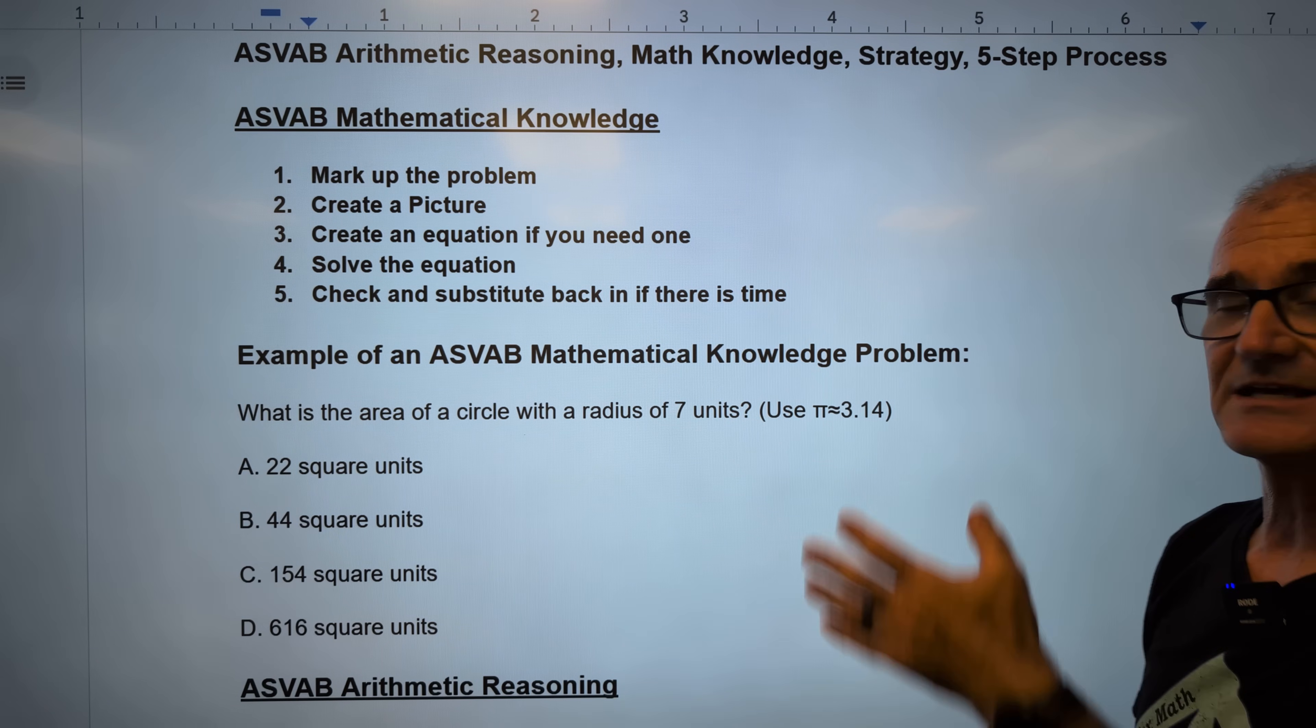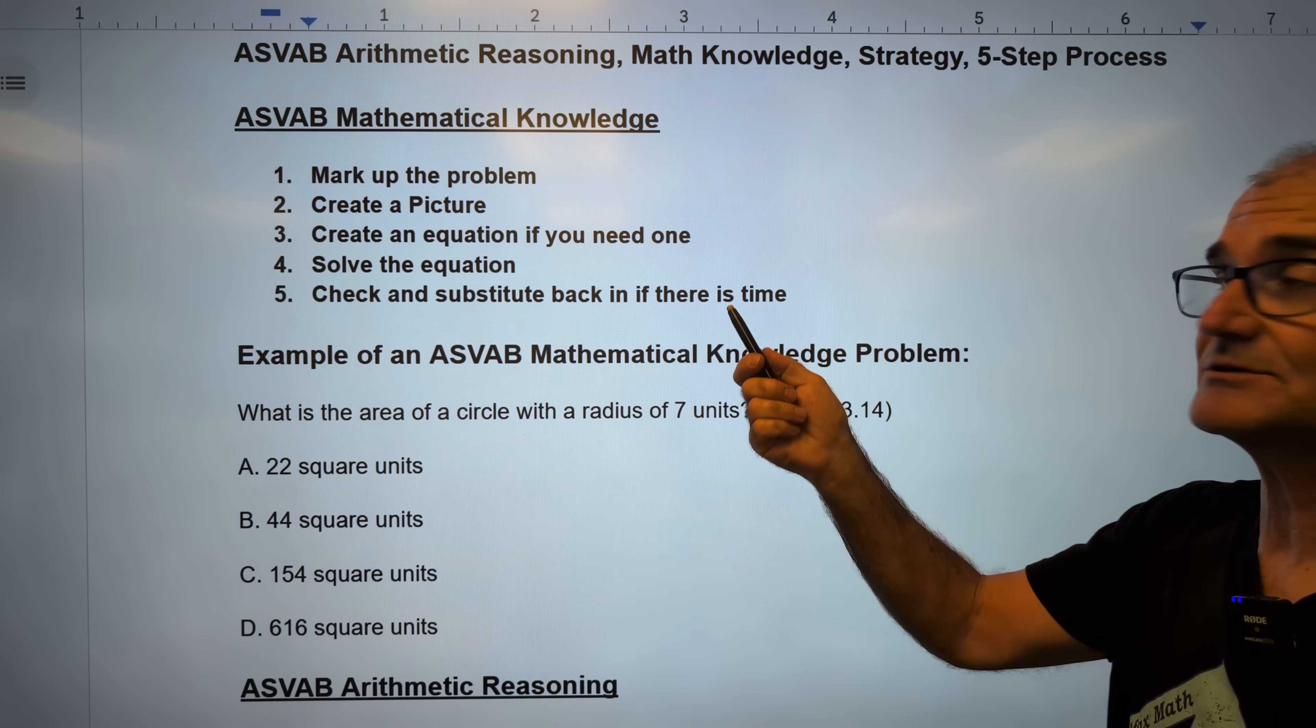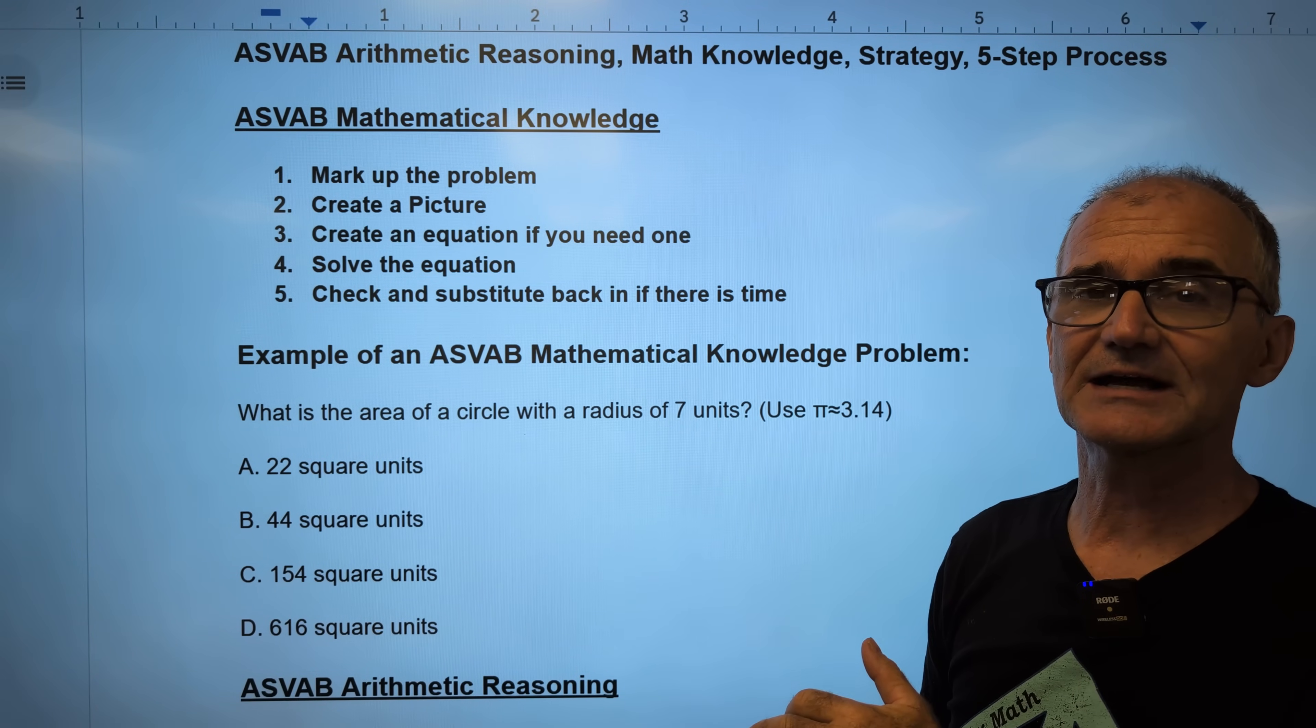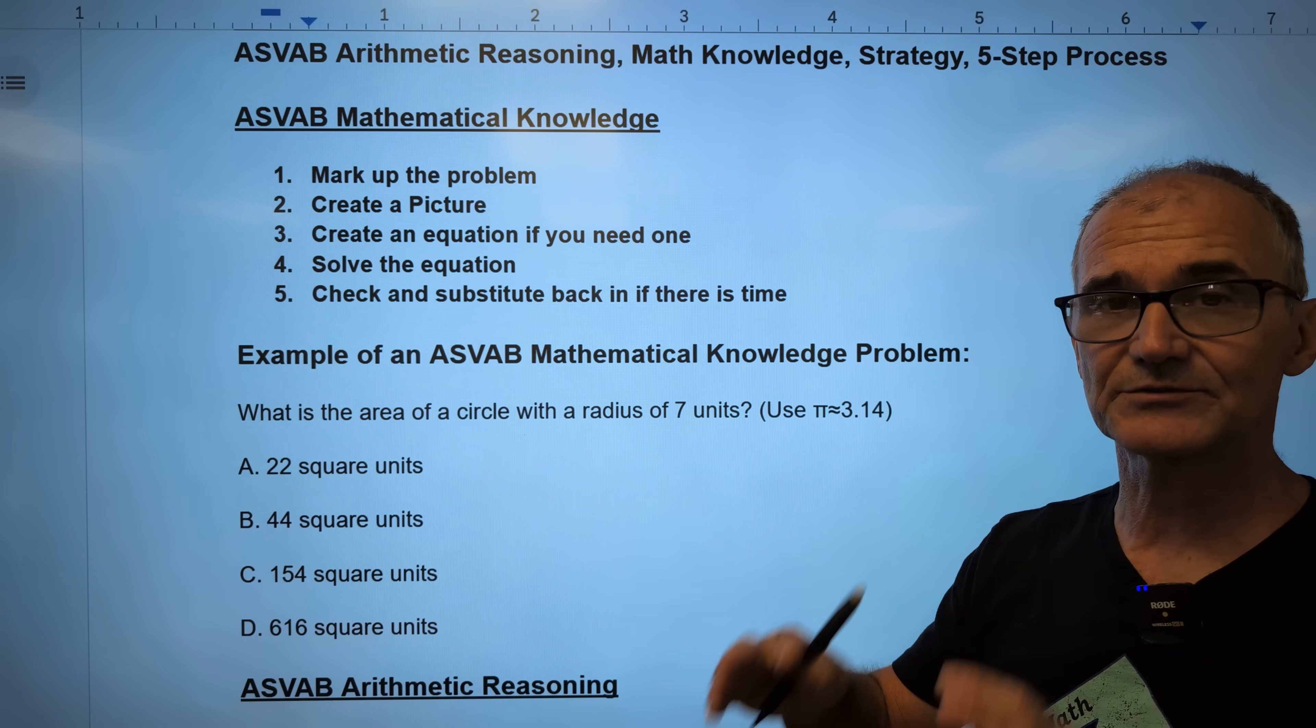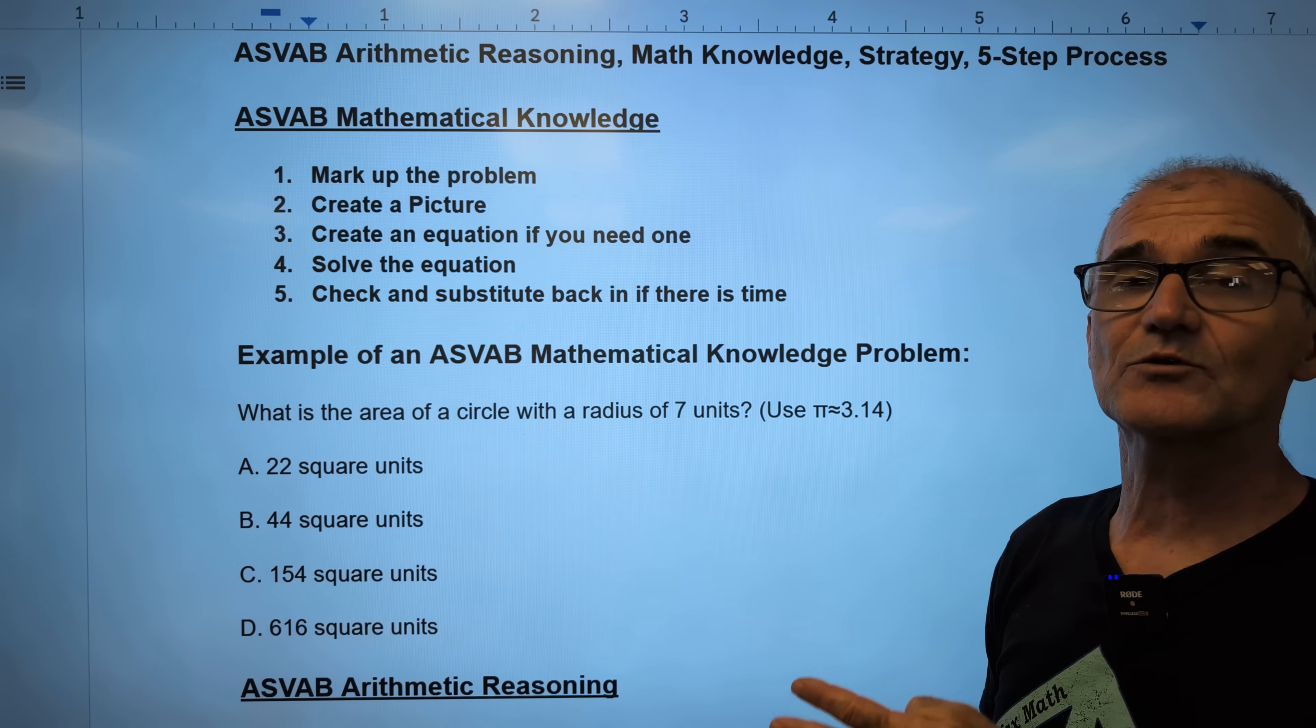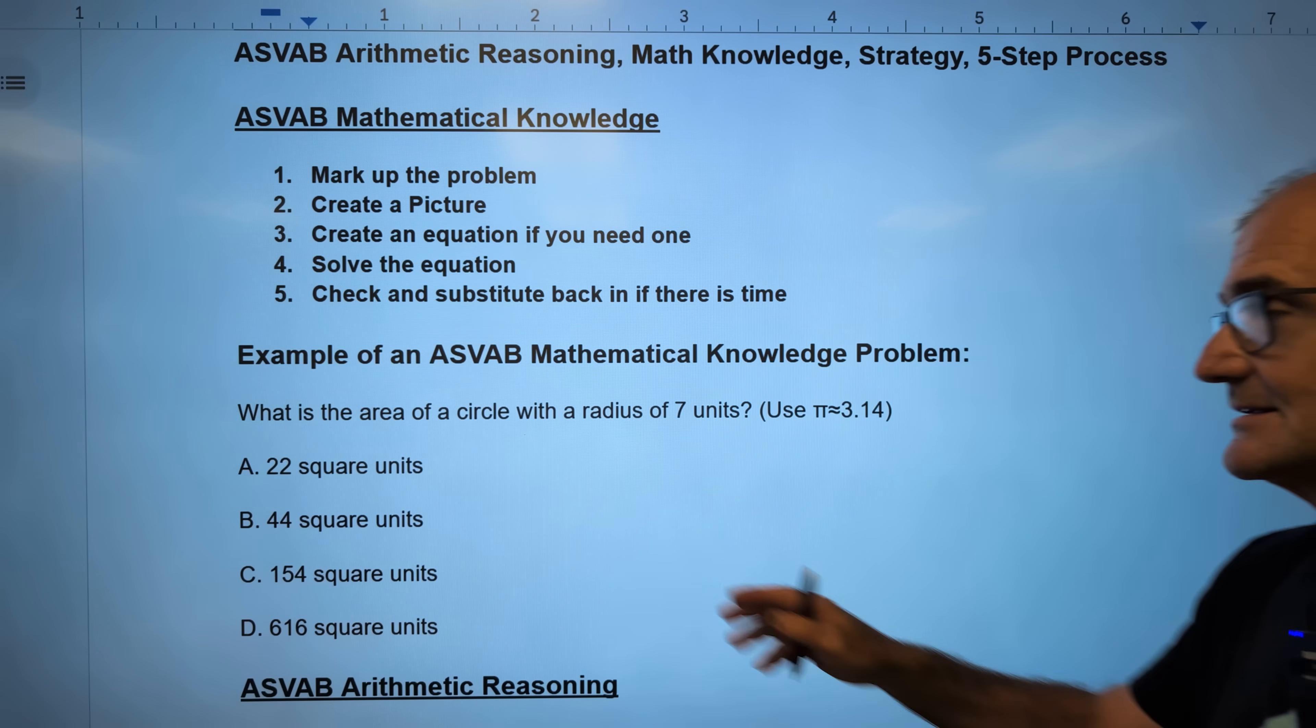I have a five-step process. It changes a little bit between math knowledge and arithmetic reasoning. Let me go over that. My five-step process for any math problem on the ASVAB in the mathematical knowledge portion is, number one, mark up the problem, circling key words, underlining big ideas, really noting the units. Number two, create some sort of picture or diagram. We really don't have very much time on any one of these problems, so this is really quick. Create an equation that represents that picture. Step four, solve that equation. Step five, check. And if there's time, substitute in your answer to make sure you did it correctly. All right. I have an example. We'll go over that in a minute.